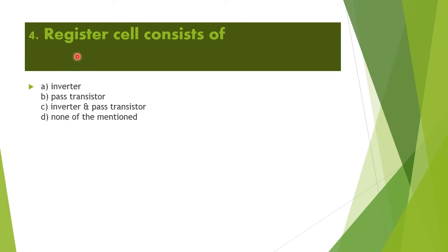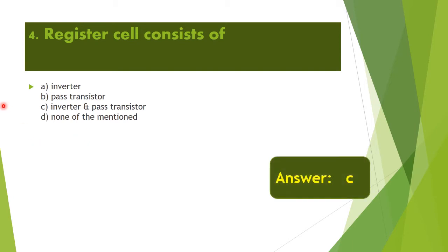Next question: A register cell consists of — Option A: inverter. Option B: pass transistor. Option C: inverter and pass transistor. Option D: none of the above. The correct answer is Option C — inverter and pass transistor.